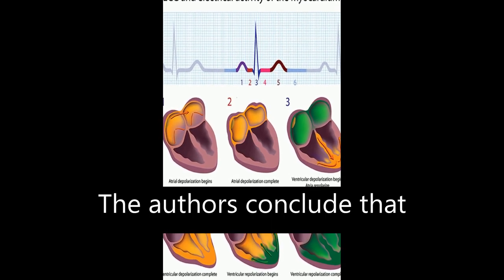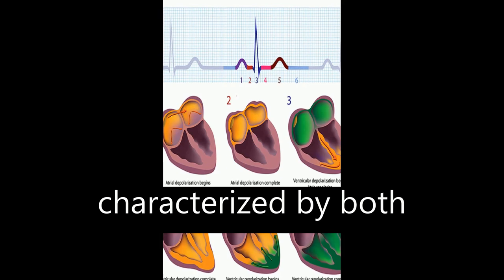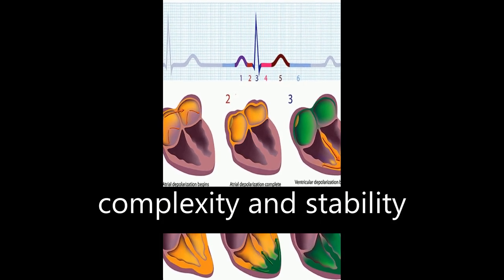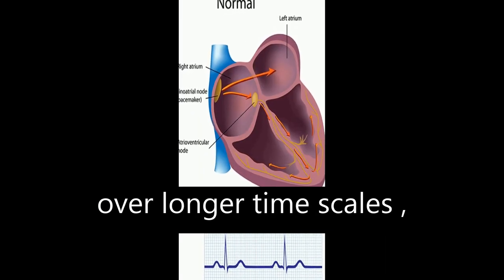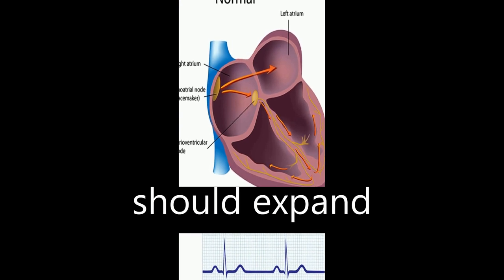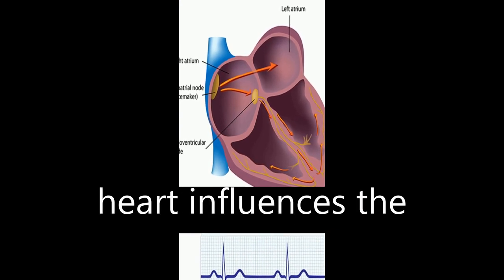The authors conclude that a coherent heart is characterized by both complexity and stability over longer time scales, and future research should expand understanding of how the heart influences the brain.